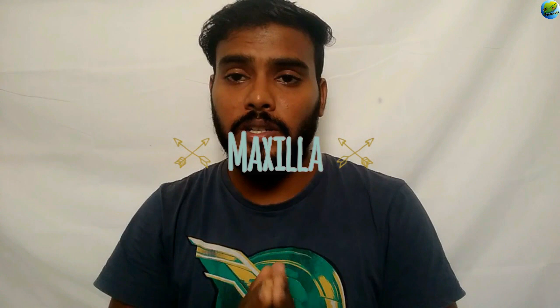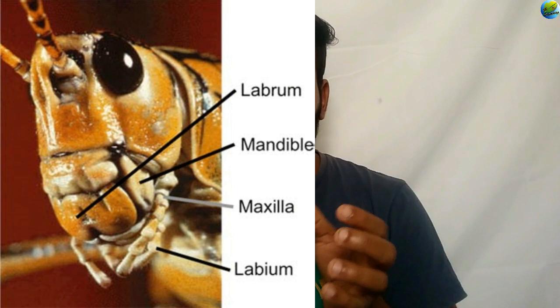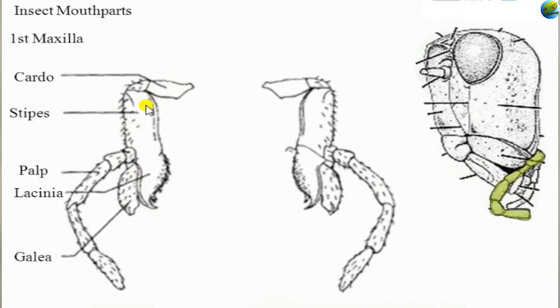The next mouth part is the maxilla, situated just below the mandibles. It is otherwise called the accessory jaw or secondary jaw, as it holds food in position to facilitate the mandibles' cutting action. Maxilla is also a paired segment with both right and left sides. The mandible is dicondylic, joined at two points, while all other mouth parts including the maxilla are monocondylic, having only one joining point. The mandible is unsegmented and sclerotized, whereas the maxilla is a two-segmented part.